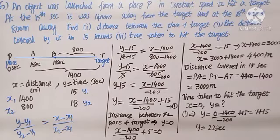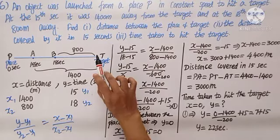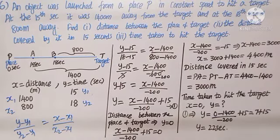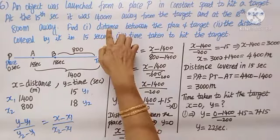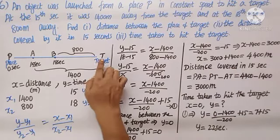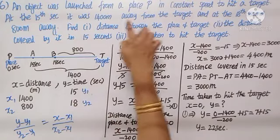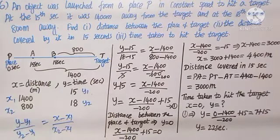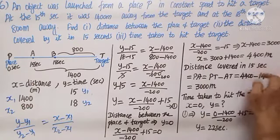This problem shows how equations of lines help in finding distance between place and target, distance covered in certain seconds, and time taken to hit the target — all practical applications. Easy hint: when asked for distance, put time equals 0; when asked for time, put distance equals 0. Note that distance covered is different from distance away from the target — total distance minus distance from target gives distance covered.